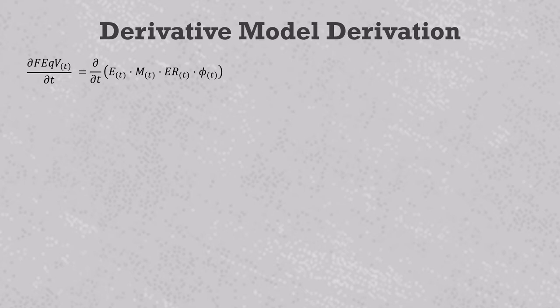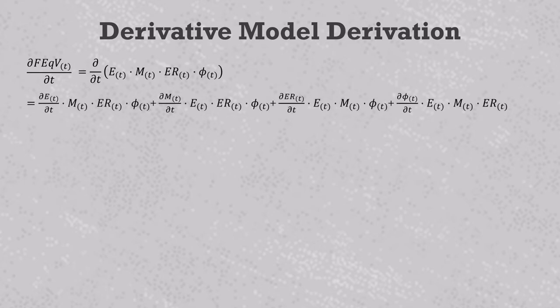That says that the instantaneous change in FEqV must be equal to the instantaneous change in EBITDA times M, ER, and phi plus the instantaneous change in multiple times E, ER, and phi plus the instantaneous change in the equity ratio times E, M, and phi plus the instantaneous change in phi times E, M, and ER.